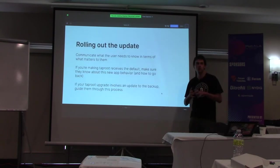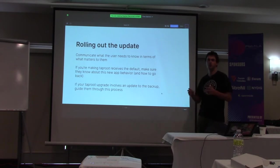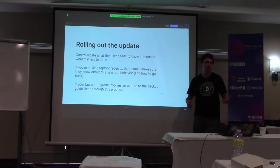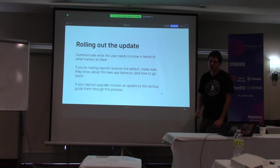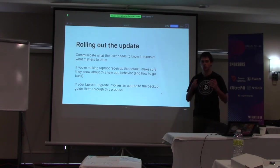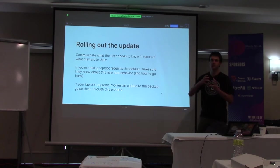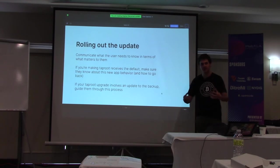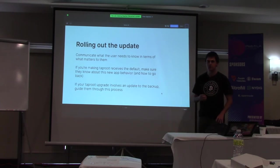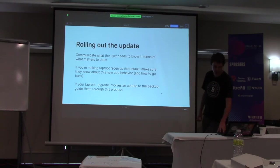If you're going to roll out Taproot receive support and you're not going to make Taproot the default, I tend to think you can get away with just not even telling anybody it's there — only the hardcore Bitcoin engineers really need to think about it. But if you are going to make Taproot the default, I think you need to explain yourself to the user, make sure they know about the new app behavior. Especially if your app involves updating the backup — like, if you roll out Taproot support to an existing wallet, are you going to ask them to create a new Taproot wallet, or use their existing private key and just derive pay-to-Taproot addresses from that?